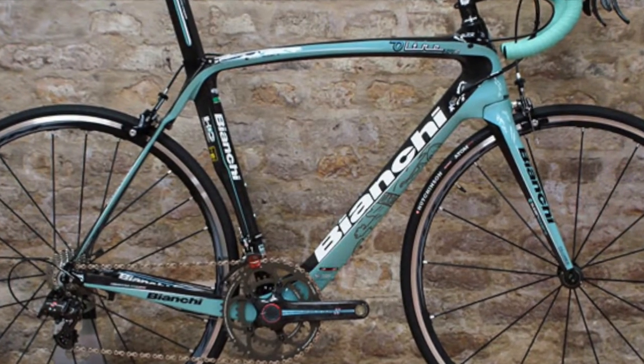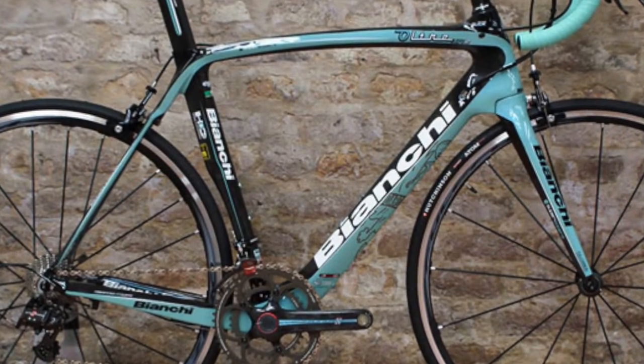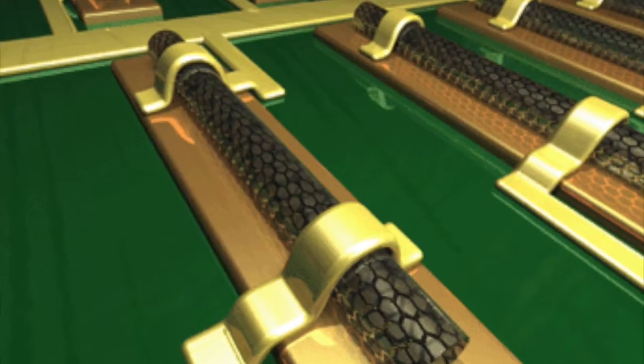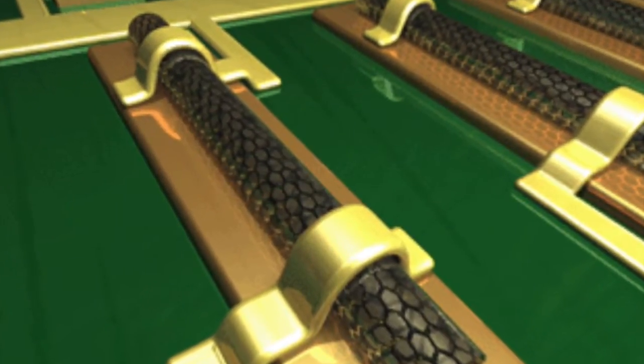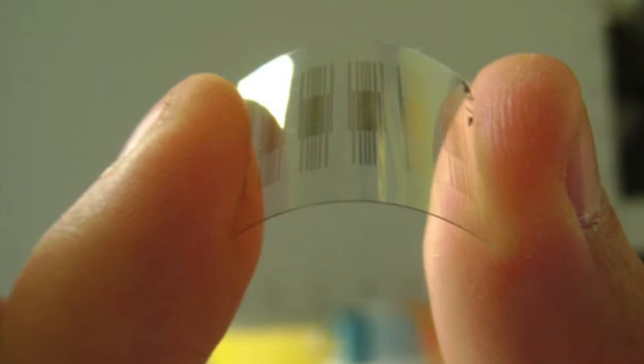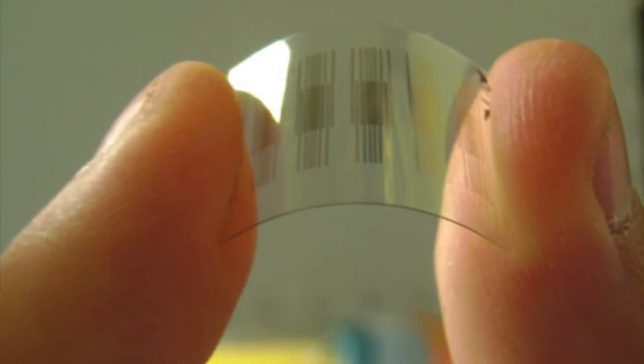Some current uses of carbon nanotubes include structurally improving bicycle components, nanoscale electronics, chemical sensors, the hulls of maritime vessels, and aerospace technology, either through the creation of conductive plastics, coatings, or composites.